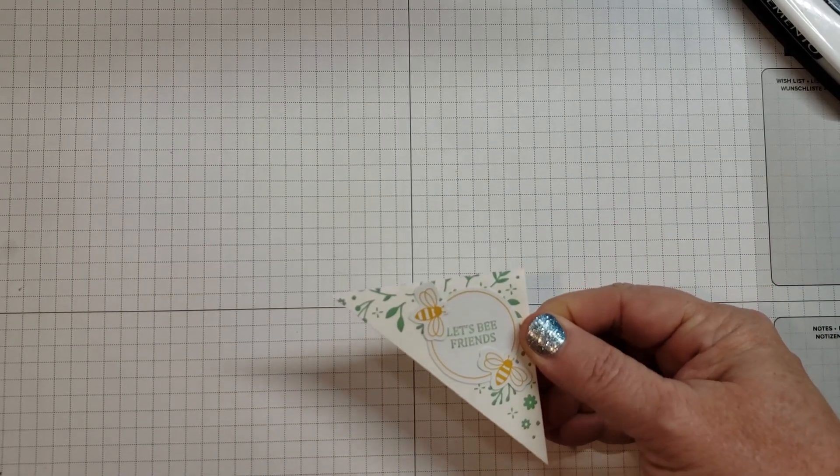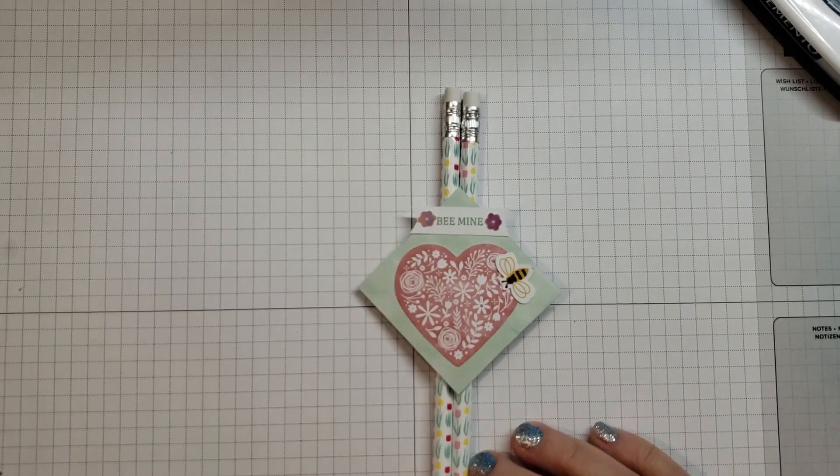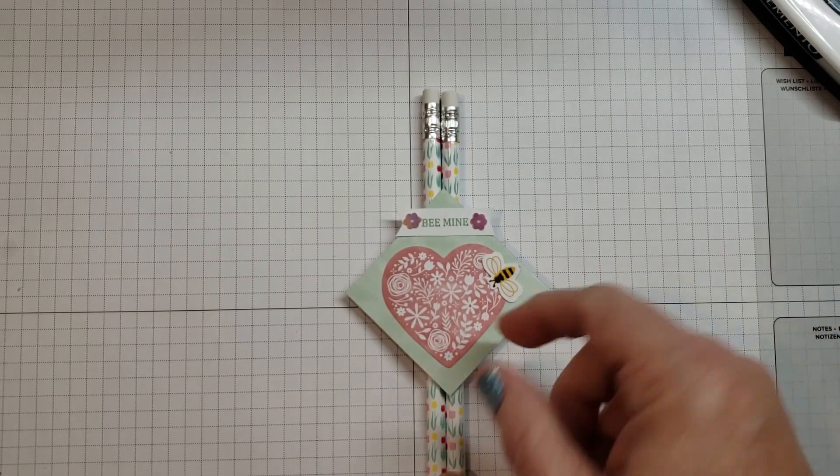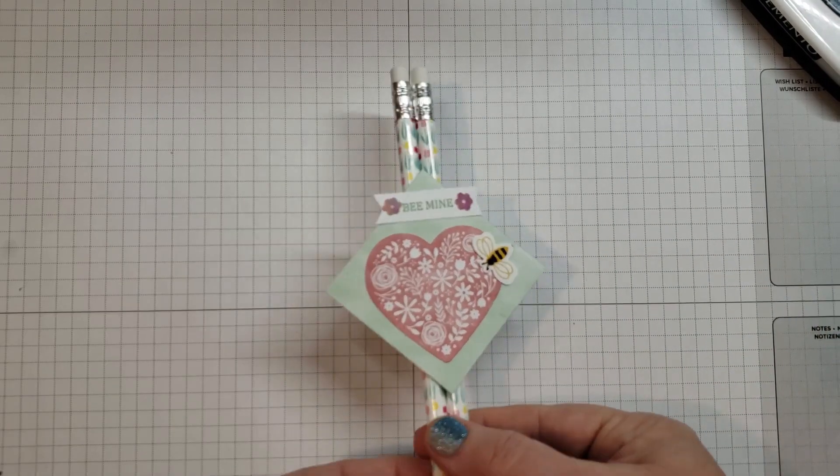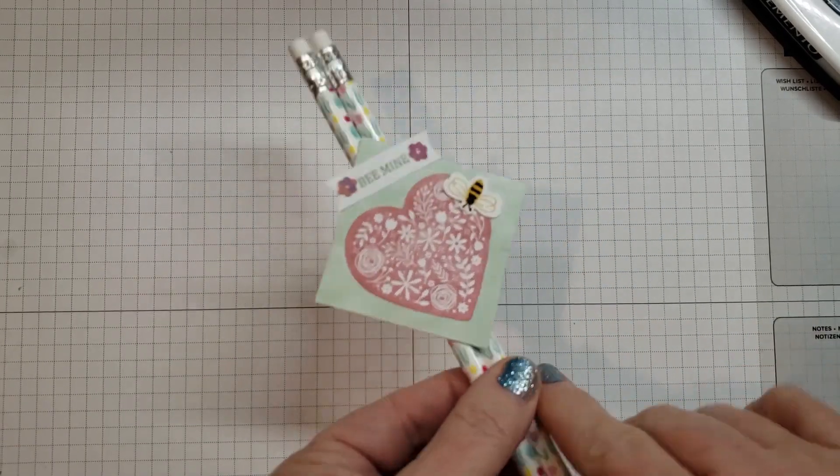And then here's another idea for classmate gifts - this pencil pack with the 'be mine' in the heart note on the front there. You could write the 'to' and 'from' on the back of your squares.